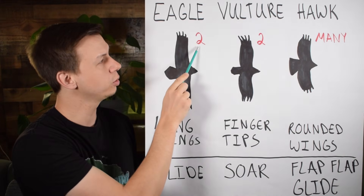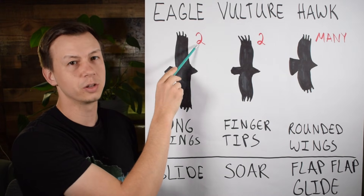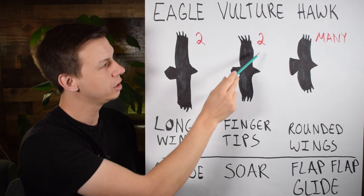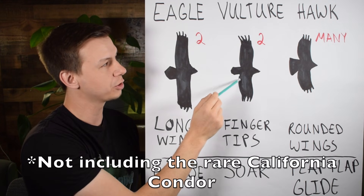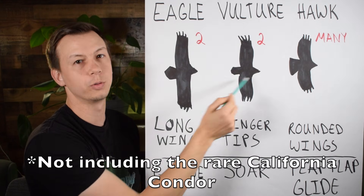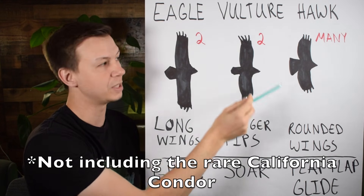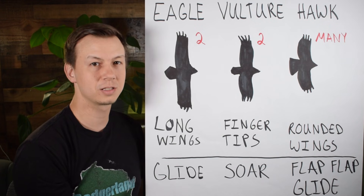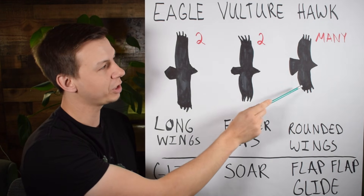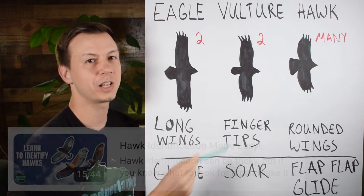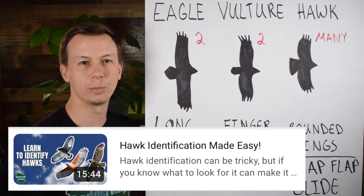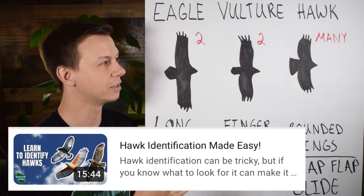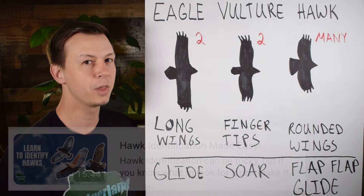Thankfully, there are only two species of eagles you'll probably encounter in the U.S. and two species of vultures, so we're going to go through those four species. There are also many different hawks, and I have a whole video on hawk identification if you want to learn about those specific birds and how to differentiate them.